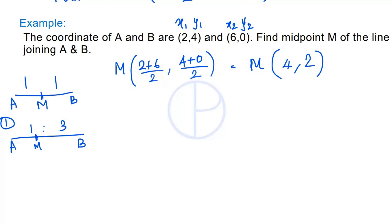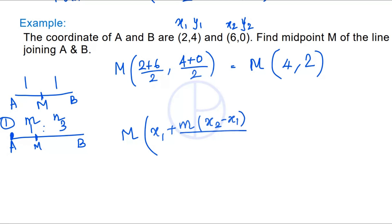Whenever you are asked to find the point that divides the line AB in ratio m:n, the formula is: M = ( x1 + m(x2 − x1) / (m + n) , y1 + m(y2 − y1) / (m + n) ). Here (m + n) is the sum of the ratio, x2 − x1 is the difference in x-axis values, and y2 − y1 is the difference in y-axis values.